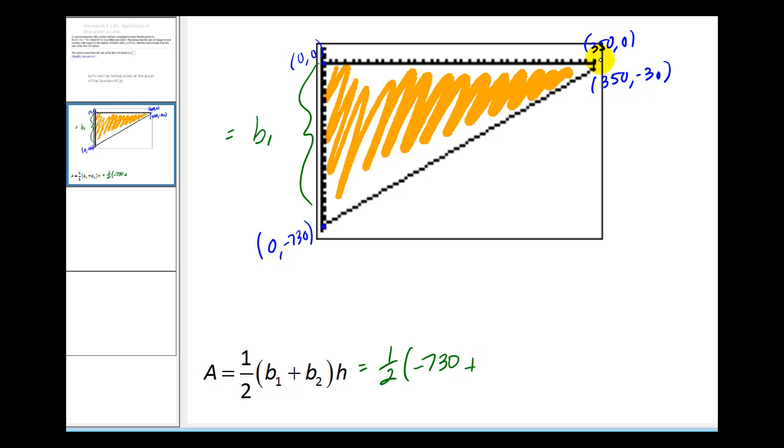Plus, over here we would have base two. Well, base two would be f(350), which would return a value of negative 30.